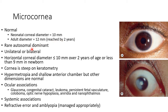Microcornea is a rare autosomal dominant condition. It can be unilateral or bilateral. Microcornea is defined as horizontal corneal diameter of less than or equal to 10 mm over 2 years of age, or less than 9 mm in newborn. This picture shows a case of microcornea. In microcornea, the cornea is steep on keratometry.